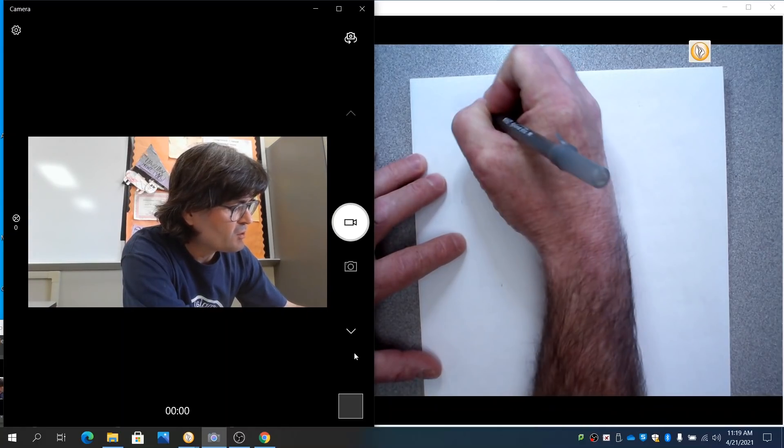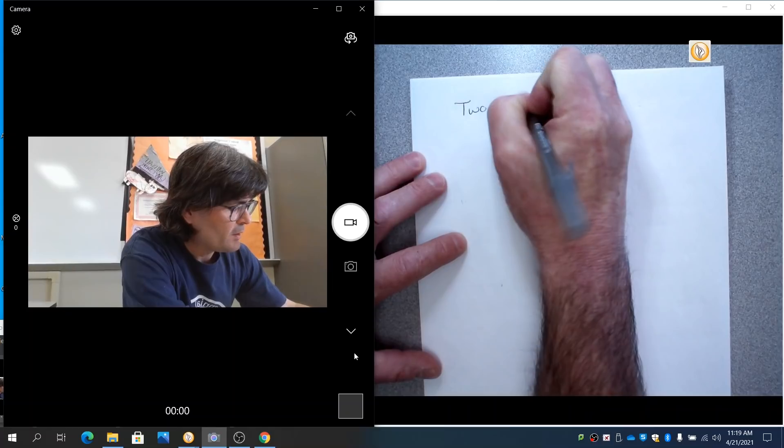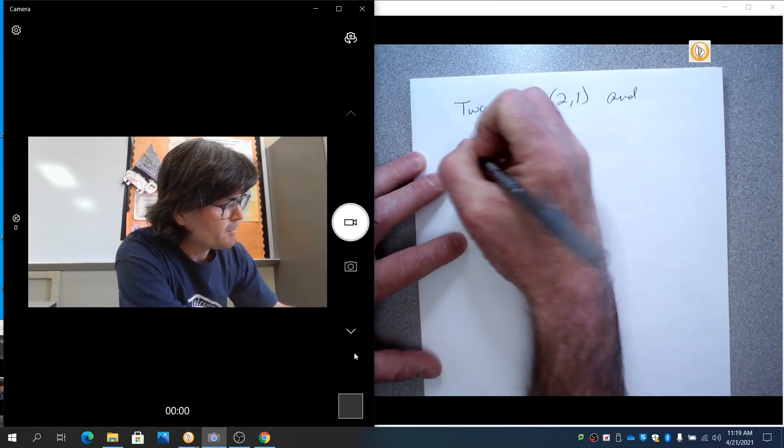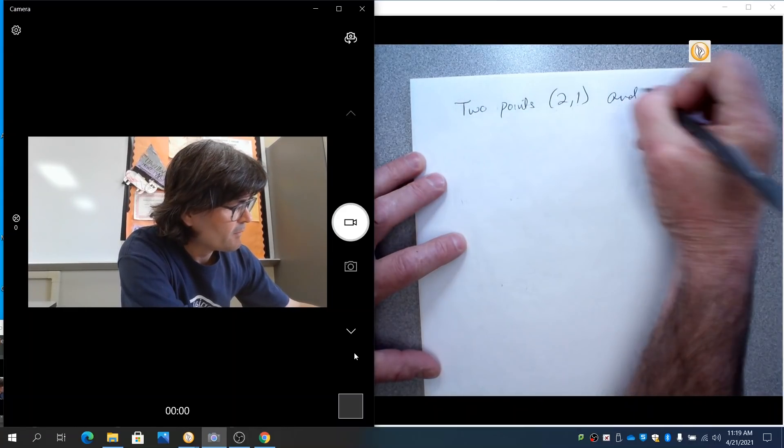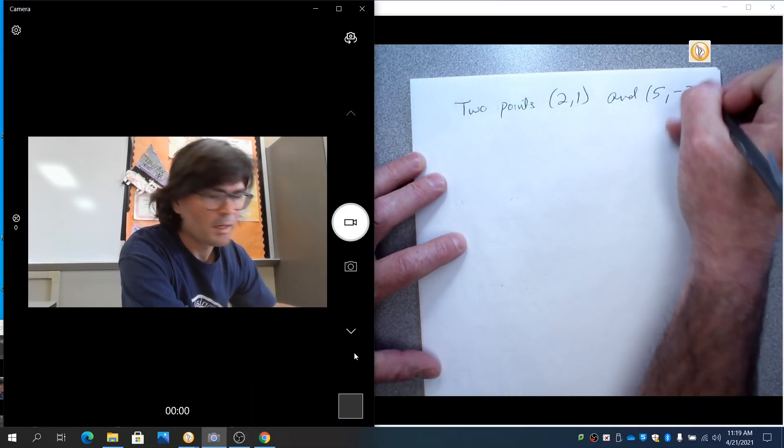So we'll start out with the two points. Two points are going to be (2,1) and (5,-3).